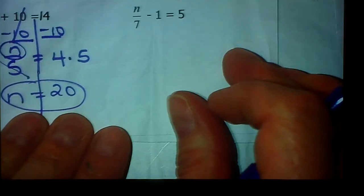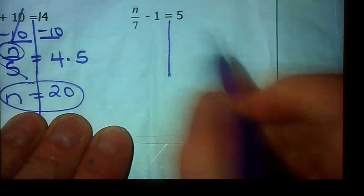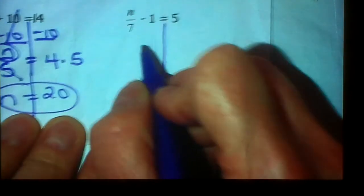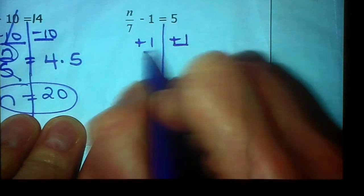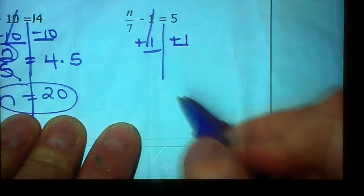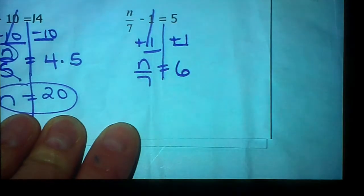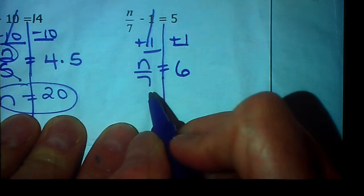All right. n sevenths minus 1 equals 5. Again, this 1 is being subtracted. That's the first thing to go. To undo, subtracting that 1, we're going to add 1. And these are gone. n sevenths is all that's left. And 5 plus 1 is 6.